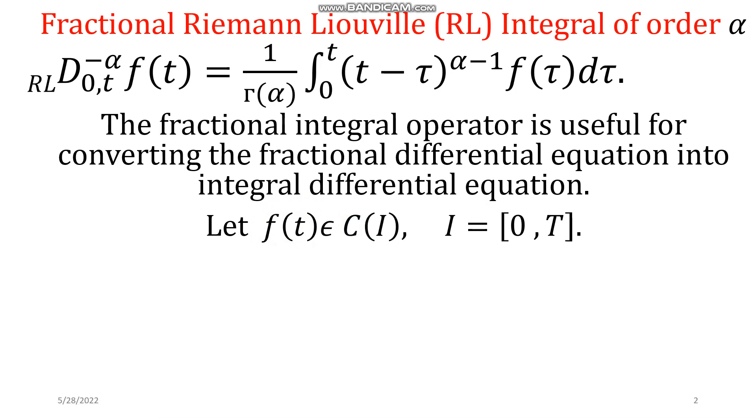Delta t stands for the step size, which is computed as the length of the interval, capital T, divided by number of iterations, where n belongs to the set of natural numbers. And t_k equals k times this step size. This will determine the next time state, while k is from 0 to n minus 1, meaning there are total n values of k.